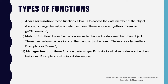There are three types of functions in C++. The first is the Accessor function, which allows us to access the data members of the object without changing their values — these are called getters, e.g. getDimension, getVolume. The second is the Mutator function, which allows us to change data members, perform calculations and show results — these are called setters, e.g. setVolume, setDimension. The third is the Manager function, which performs specific tasks to initialize or destroy class instances, e.g. constructors and destructors.